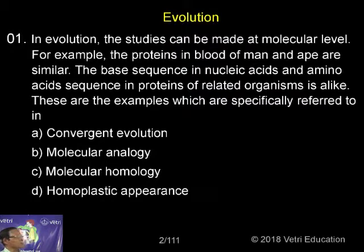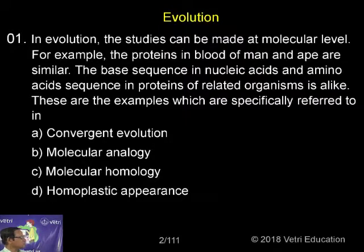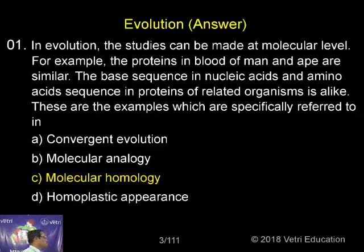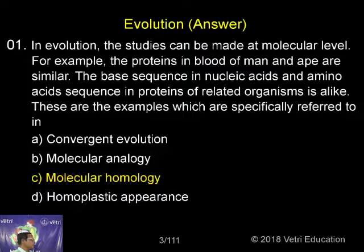The ape's blood and man's blood are similar. The base sequences in nucleic acids and amino acids are also more or less similar between related organisms. When different organisms converge towards one point at the molecular level, that is called convergent evolution. If organisms are similar at their molecular level, it is called molecular homology.